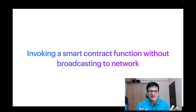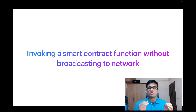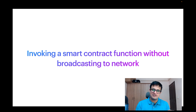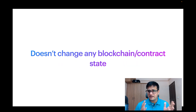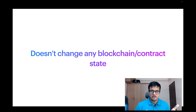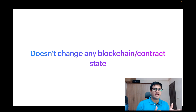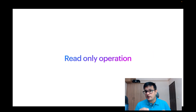First up, what is a call? Technically speaking, a call is a way to invoke a smart contract function without broadcasting it to the network. What it really means is that we read the state from the node and we don't change anything on the blockchain. So it doesn't change any blockchain or contract state — it's called a call.